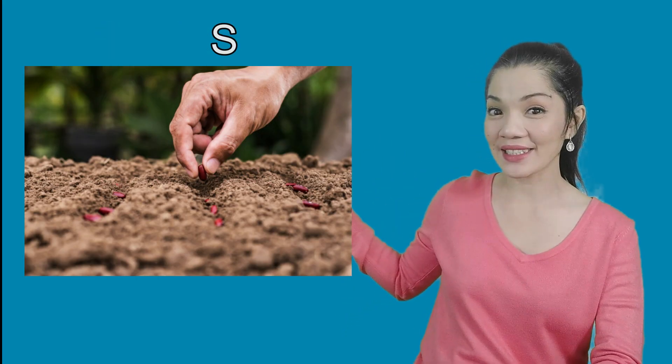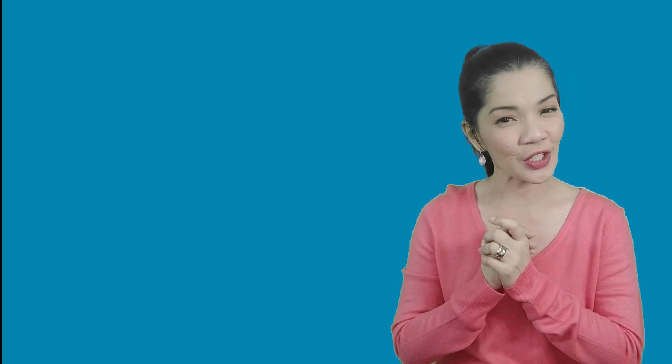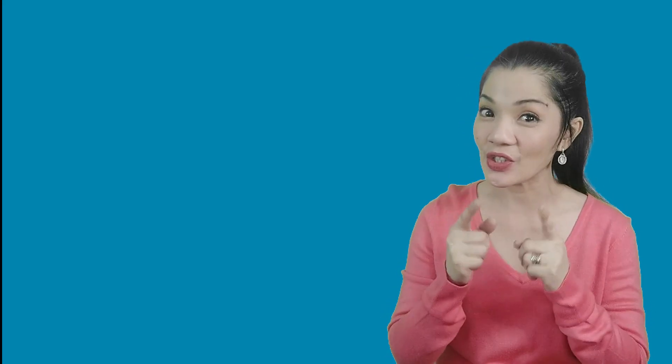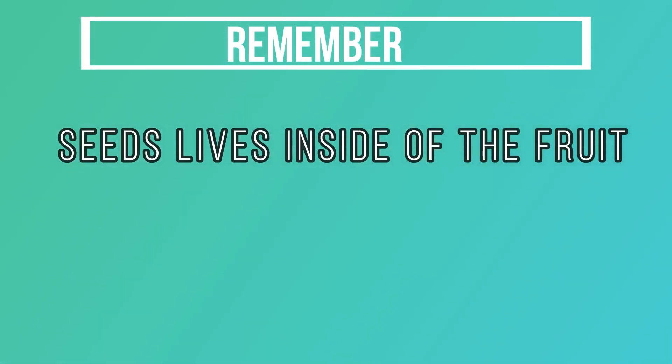The last part of the plant that we're gonna learn today is about the seeds. Where are the seeds in the plant? Seeds hide inside the fruit. The seeds have an incredible job — the seeds grow into new plants. Fruits fall from the tree and rot. The seeds fall out and can make new plants. Remember, seeds live inside of the fruit.